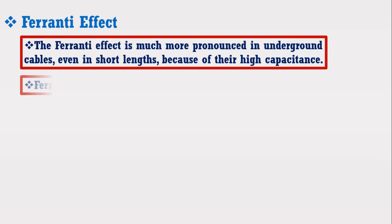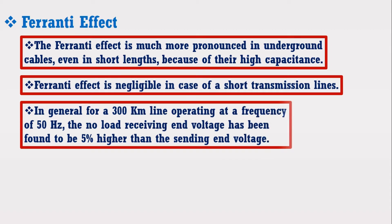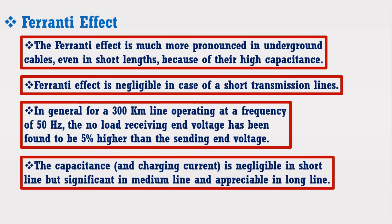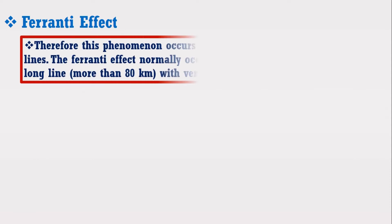Ferrenti effect is negligible in case of a short transmission line. For a 300 km line operating at a frequency of 50 Hz, the no-load receiving end voltage has been found to be 5% higher than the sending end voltage. The capacitance is negligible in short lines but significant in medium lines and appreciable in long lines. Therefore, this phenomena occurs in medium and long lines.